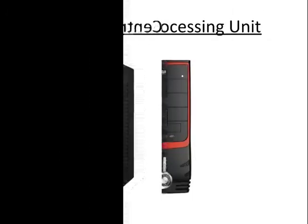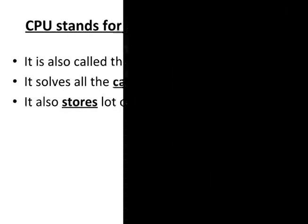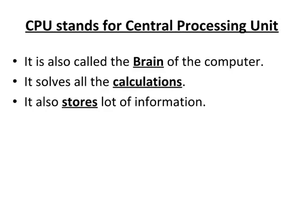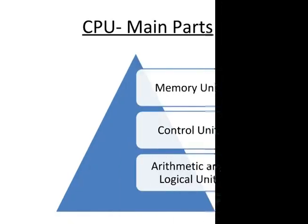Next is CPU. CPU stands for Central Processing Unit. It is also called the brain of the computer. It solves all the calculations and also stores a lot of information. It has three main parts: Memory Unit, Control Unit, and Arithmetic and Logical Unit.